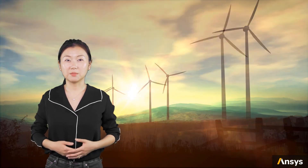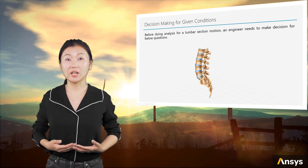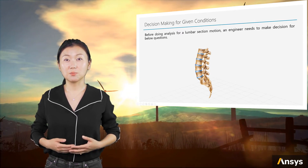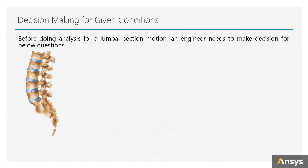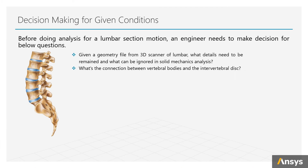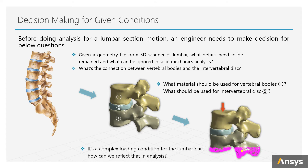Let's have a look at a more complicated problem. A mechanical simulation is needed for the study of the lumbar section motion. An engineer needs to make decisions for such questions: given the geometry file from a 3D scanner of the lumbar region, what details need to be retained and what can be ignored in solid mechanical analysis? What is the connection between the different parts? What material should be used for the vertebral bodies and what should be used for the intervertebral disc? It's a complex loading condition for the lumbar part — how can we reflect that in the analysis?